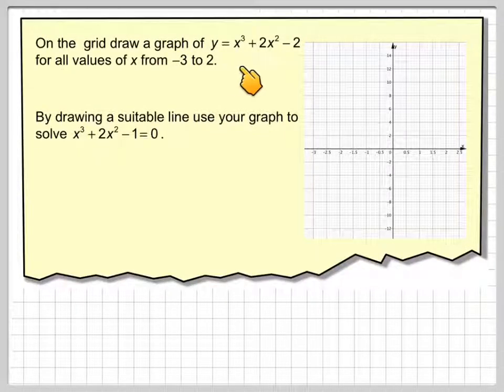On the grid, draw a graph of y equals x cubed plus 2x squared minus 2 for all the values of x from minus 3 to 2. By drawing a suitable line, use your graph to solve the equation x cubed plus 2x squared minus 1 equals 0.